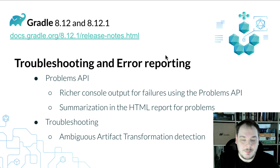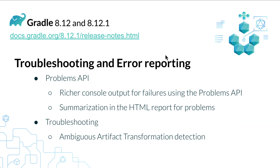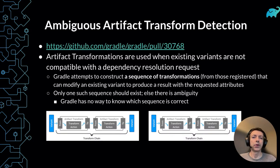Now let's speak about artifact transforms and better error detection there. Artifact transforms are an important Gradle concept that is heavily used in the Android ecosystem. They are used to satisfy dependency resolution requests when a component's existing variants are not compatible with the requested attributes. Transformations contain actions that modify a variant's artifacts and produce new artifacts identified by a changed set of attributes.